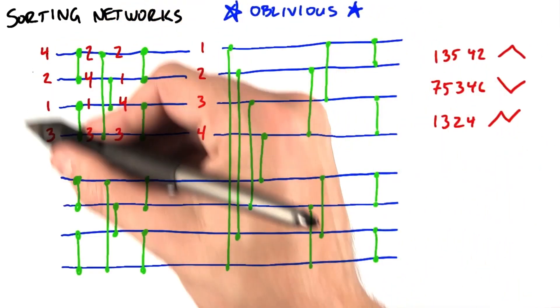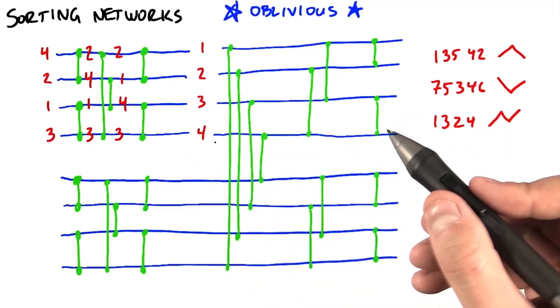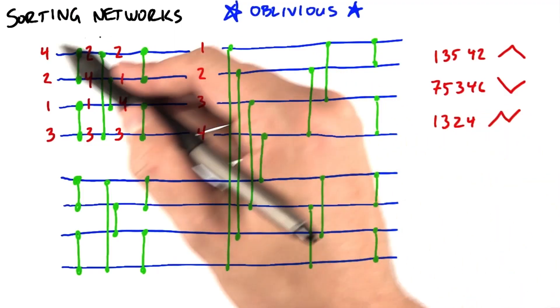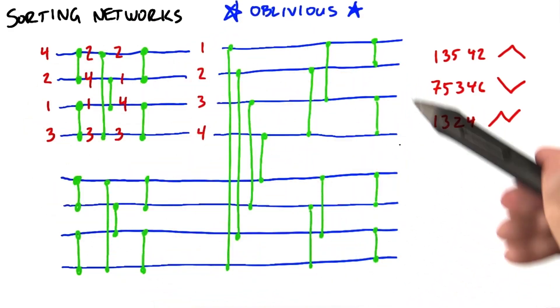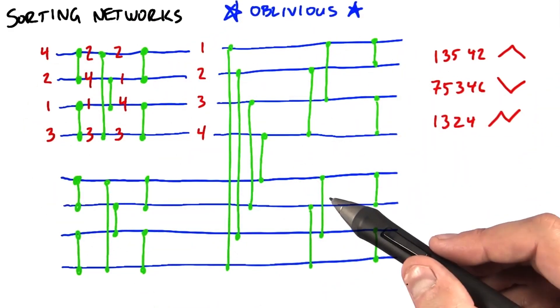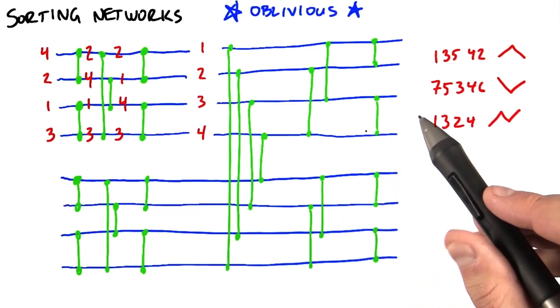Fortunately, this bitonic sorting network scales in a straightforward and easily programmable way. So we had a little sorting network that would sort four items. It's fairly straightforward to expand it so that now it can sort eight. So let me try to give you a little intuition about how that works.